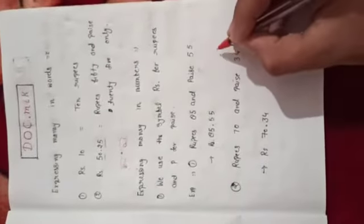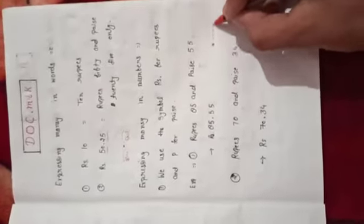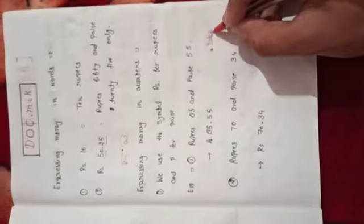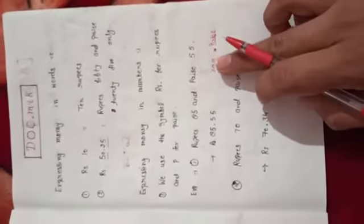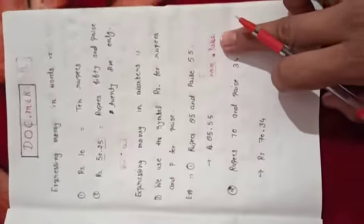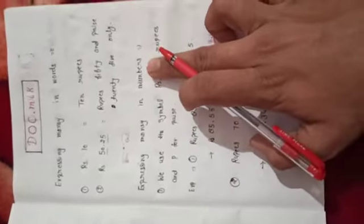Now expressing money in numbers — you know how to express money in words. The main thing is that the right side of the point is called paise and the left side of the point is called rupees. For example, 9 rupees and 25 paise.